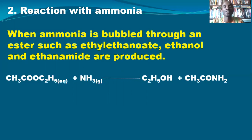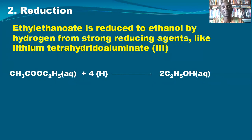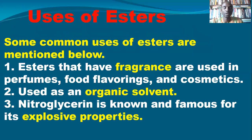The next reaction is reduction. Ethyl ethanoate, when it is reduced, gives ethanol. It is reduced to ethanol by hydrogen from a strong reducing agent like lithium tetrahydroaluminate. When hydrogen attacks ethyl ethanoate, it reduces it to ethanol. Number three chemical reaction: reduction.